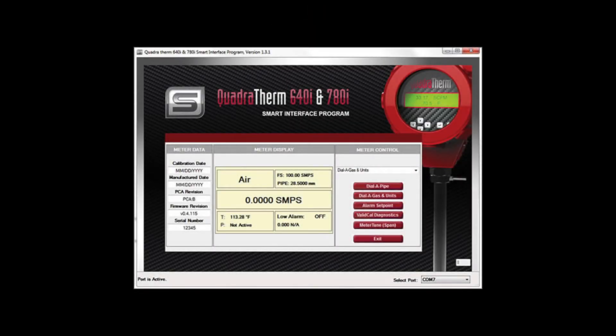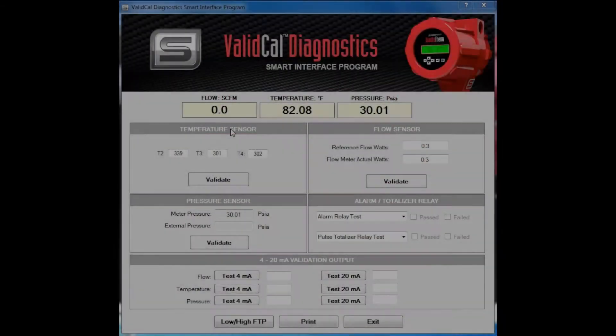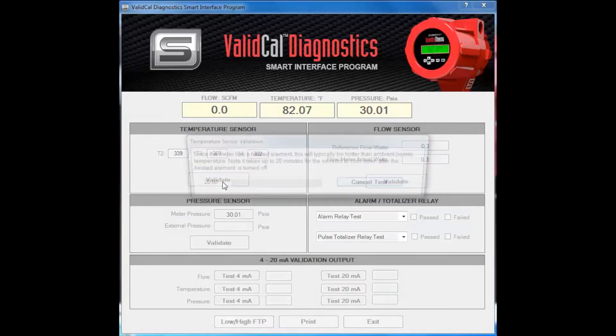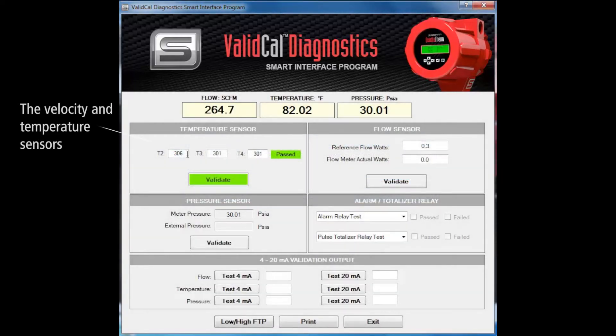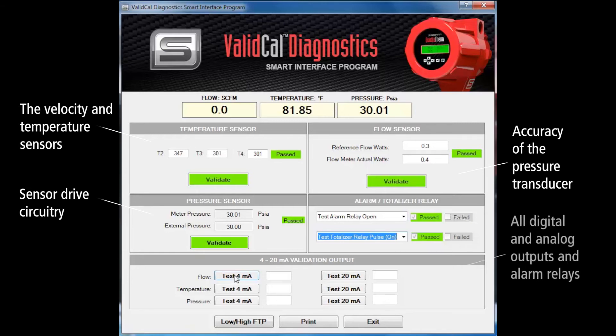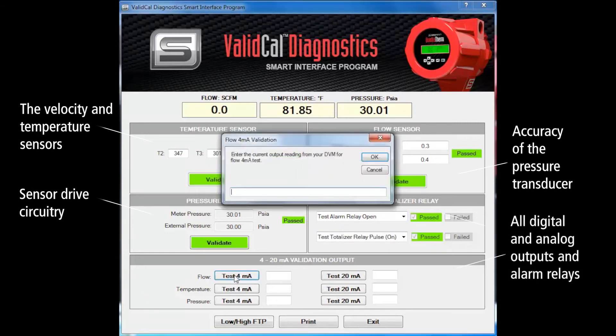Sierra offers a free in-situ calibration validation software package we call ValidCal Diagnostics. Unlike some other validation routines, Sierra's ValidCal Diagnostics program provides a complete check of all the meter's components, including the velocity and temperature sensors, sensor drive circuitry, accuracy of the pressure transducer, and all digital and analog outputs and alarm relays.